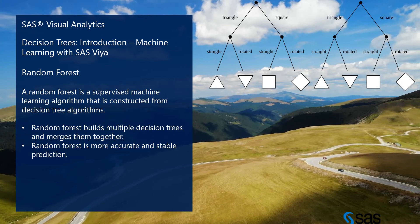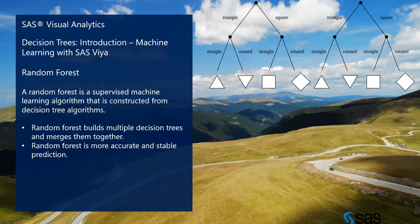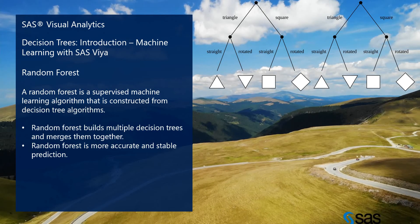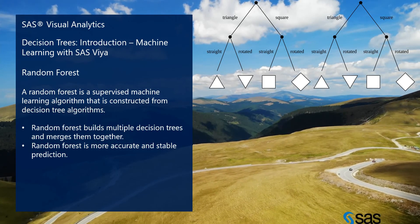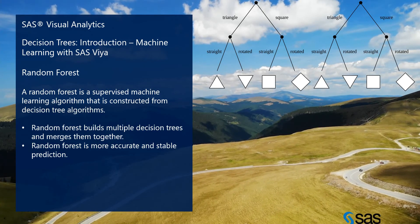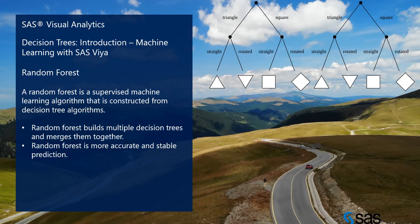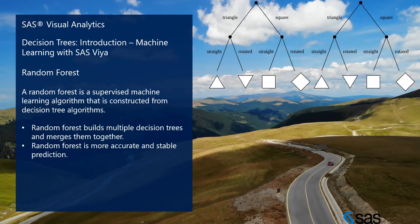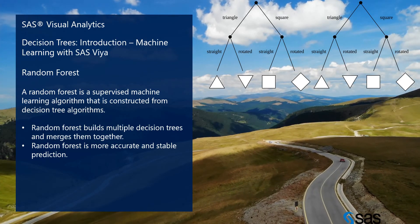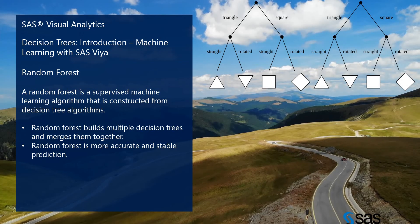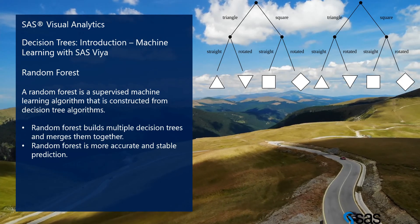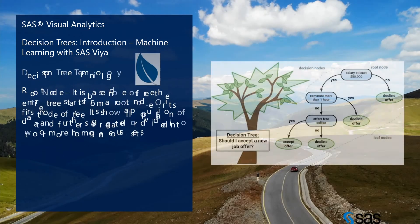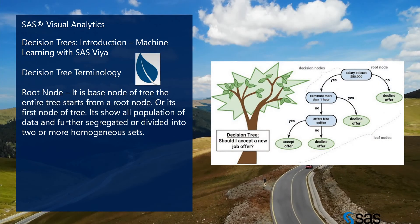Having multiple decision trees helps us make predictions more accurately and correctly, giving stable predictions. That is why we use random forest in SAS Viya multiple times for decisions — because it is accurate and stable.